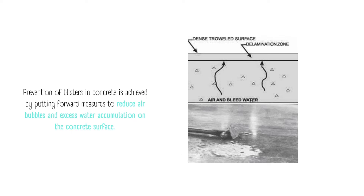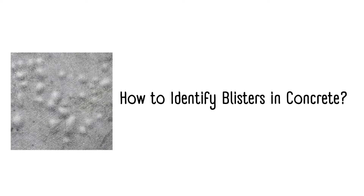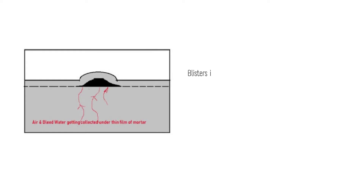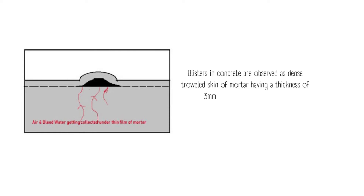How to identify blisters in concrete: blisters in concrete are observed as a dense trowel skin of mortar having a thickness of 3 mm with voids underlying it, as shown in the figure. These air or water bubbles move around under the concrete surface during the whole troweling process.